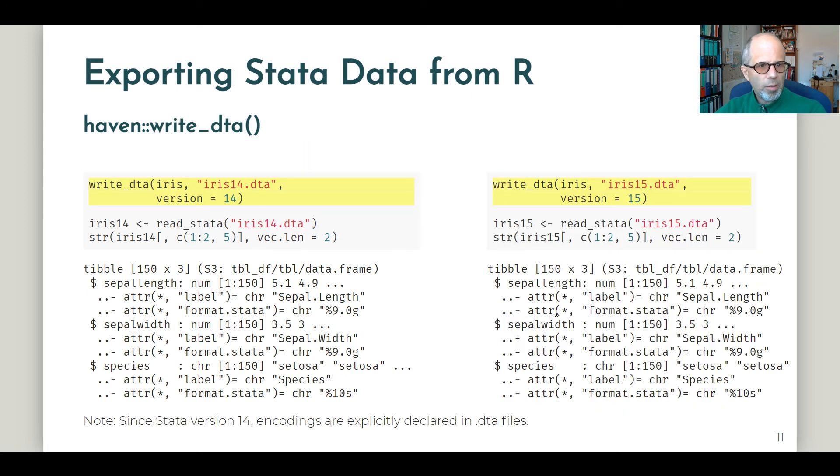How to export Stata data from R? It's pretty straightforward. Write underscore DTA. What is notable in Stata: I was a Stata user for some time and I really struggled when I was self-employed and couldn't afford to buy a new license each year. Stata is quite bad in that sense that file formats change between different Stata versions. When I didn't have the latest Stata version, I couldn't even open data that people sent me that was saved from the newest version because file formats were not compatible between versions. Had I worked with R already back then, I wouldn't have had a problem to import this data and maybe store it in a different version. The default is currently version 14, but up to version 15 is supported at the moment. We can store data in different versions. Note that since Stata version 14 only, encodings are explicitly declared in DTA files. That wasn't the case before version 14.